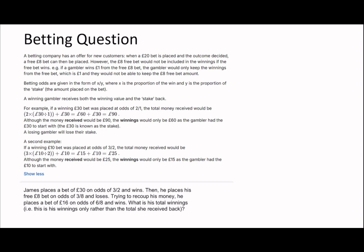Last question. I kind of just made this one up. James places a bet of £30 at odds of 3/2 and wins. Then he places a free bet of £8 at odds of 3/8 and loses. Trying to recoup his money, he places a bet of £16 at odds of 6/8 and wins. What is his total winnings? In the first one, he wins, so therefore he gets, once again, stake plus the winnings. He gets 30 times 3/2, which is going to be £45. The second bet, you lose it, so we actually don't need to calculate it at all because we're just worried about the total winnings.